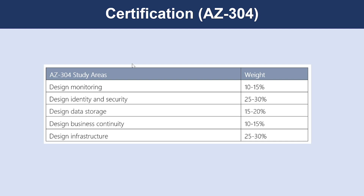On a high level, Microsoft expects you to go through five different modules to study for AZ-304. On the right-hand side, you can see different weightages for different study areas. The higher the weightage, the more questions you can expect on the examination day. As you can see, designing identity and security and designing infrastructure have more weightages compared to other study areas, meaning you will have to focus more on how to design your infrastructure, identity, and security.